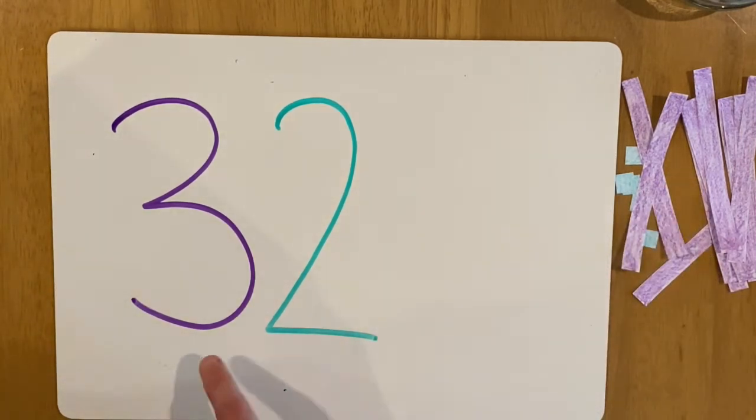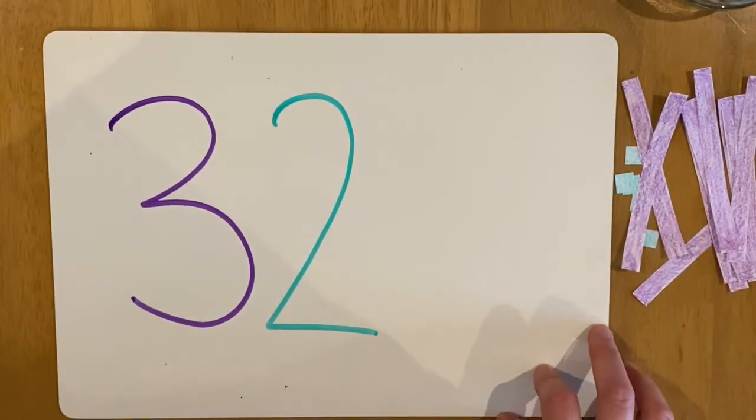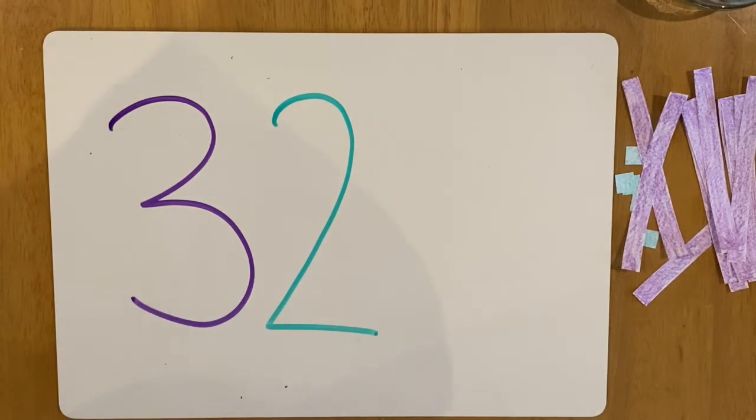So use the deans that you made to make the number 32. Pause the video and then play it when you're finished.